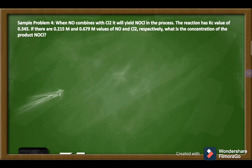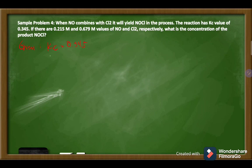Sample problem number four: When NO combines with Cl2, it yields NOCl. The reaction has a KC value of 0.345. If the concentrations of NO and Cl2 are 0.215 M and 0.679 M respectively, what is the concentration of the product NOCl? Our given are: KC = 0.345, [NO] = 0.215 M, and [Cl2] = 0.679 M. We are looking for the concentration of NOCl.